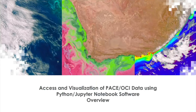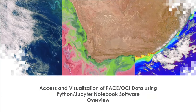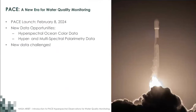Today we'll be accessing and visualizing PACE Ocean Color Imager data, or OCI, using Python and Jupyter Notebooks. With PACE, launched on February 8th of this year, we have entered a new era for water quality monitoring. PACE has three instruments: the Ocean Color Imager, which is a hyperspectral imager, and two polarimeters providing hyper- and multispectral polarimetry data. With these new data streams come new data challenges, and we hope this training helps you access and analyze PACE data more easily.